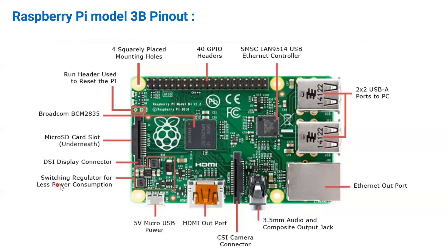As switching regulators are characterized by less power consumption, this SMPS is suitable for the single board computer system. There is a micro USB power connector where 5 volt power can be provided. There is an HDMI output port where you can connect high definition output devices like your display. There is a camera connector called the CSI connector, and an audio jack for audio output.